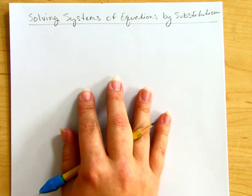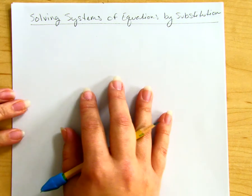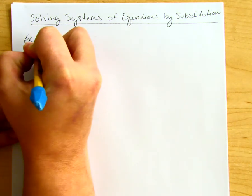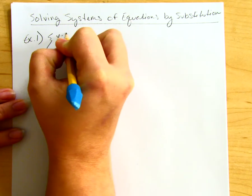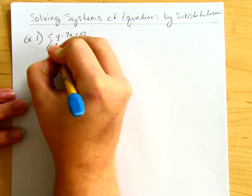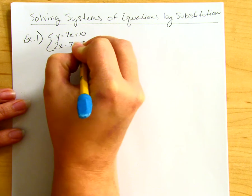Today we're going to talk about how to solve a system of equations by substitution. For example, if you're given an equation in the form y = 7x + 10 and your other equation is in standard form 2x - 7y = 24.